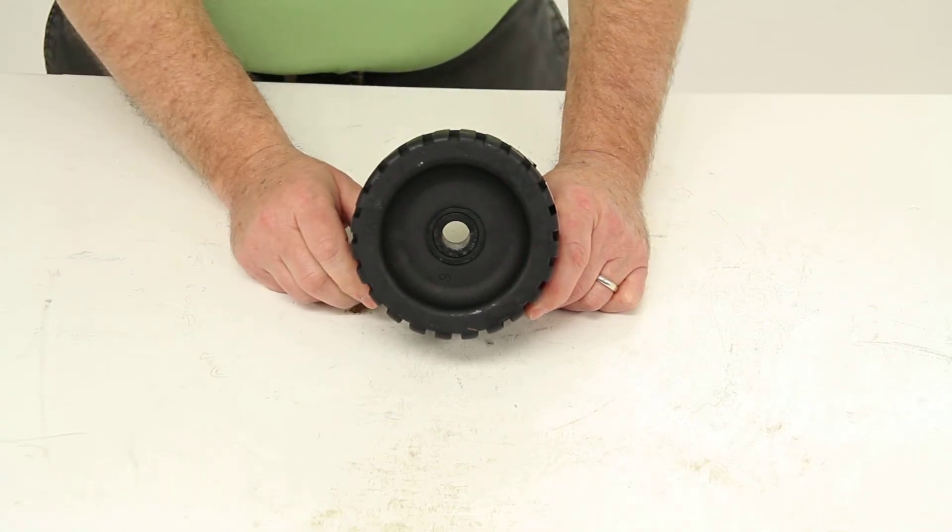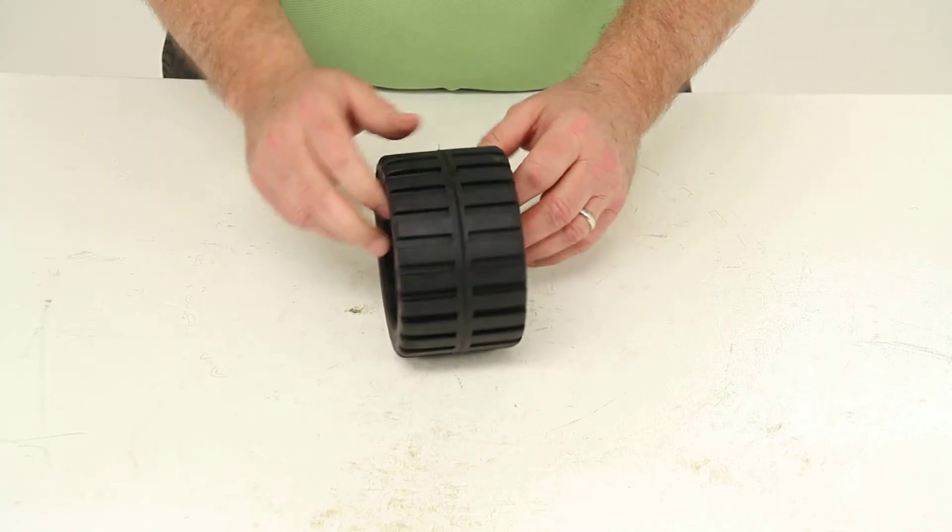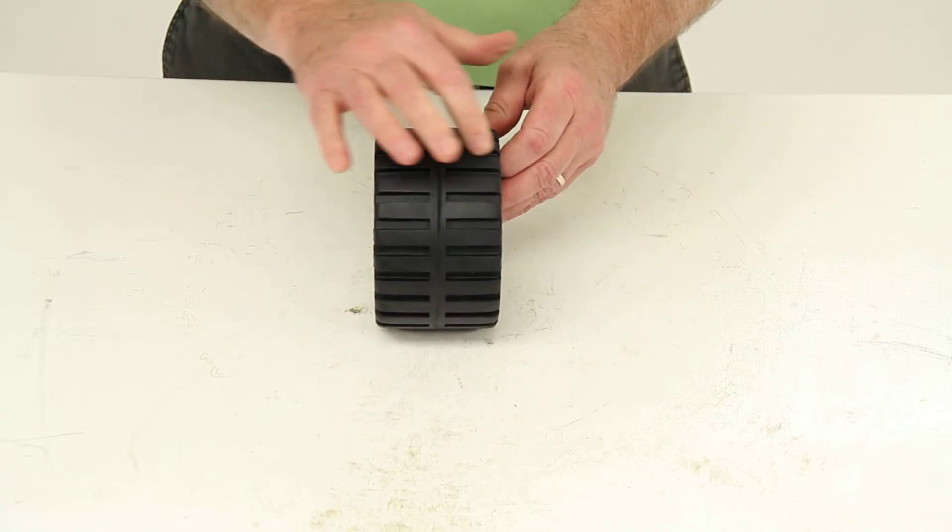Today we're going to review part number YR530R-5P. This is a Yates RID wobble roller.